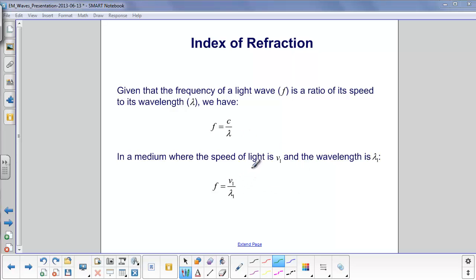Now, if I take a medium where the speed of light is V1, and its wavelength is lambda 1, well, I have the frequency as V1 over lambda 1, and we know that these two frequencies are the same because the frequency of light does not change as it transfers from one medium to another.